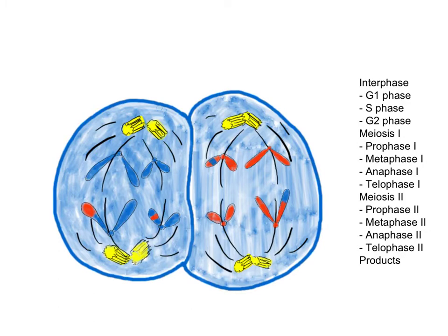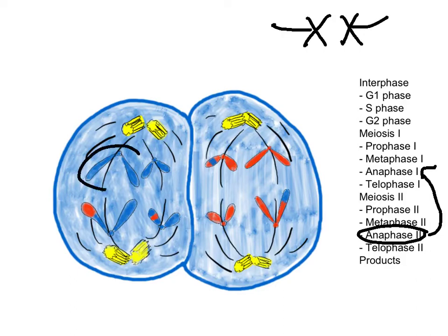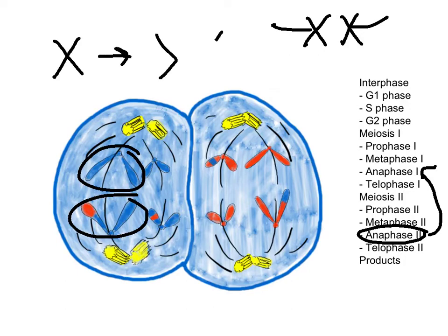The next phase of meiosis 2 is called anaphase 2. As you can probably guess, it's pretty similar to anaphase 1. However, this time, instead of homologous pairs being separated from each other, our sister chromatids are actually being separated from each other. So it's now going from that X shape to the just single chromatids.